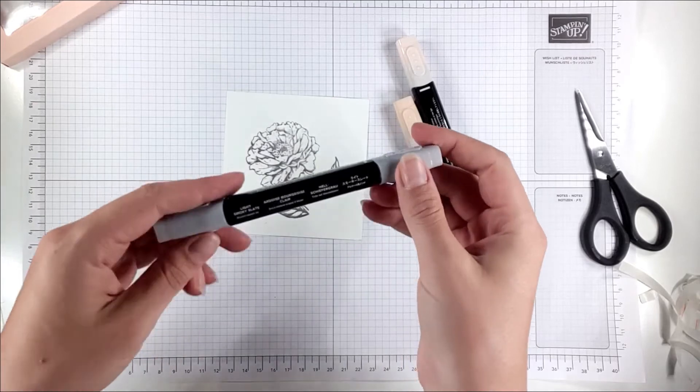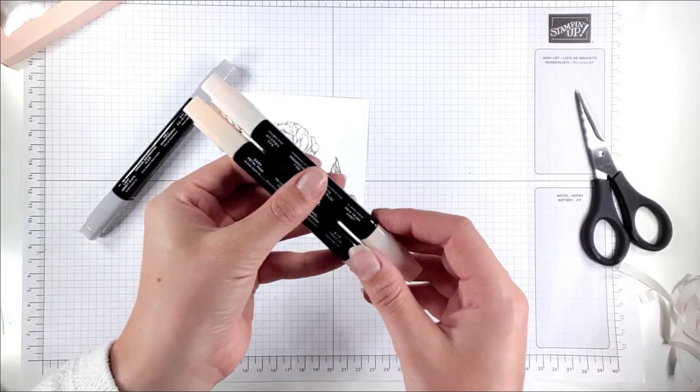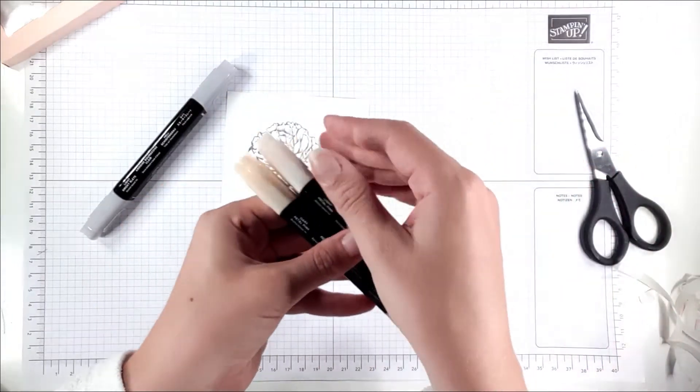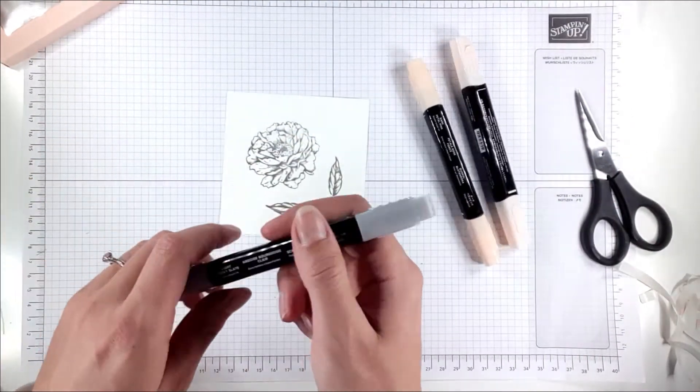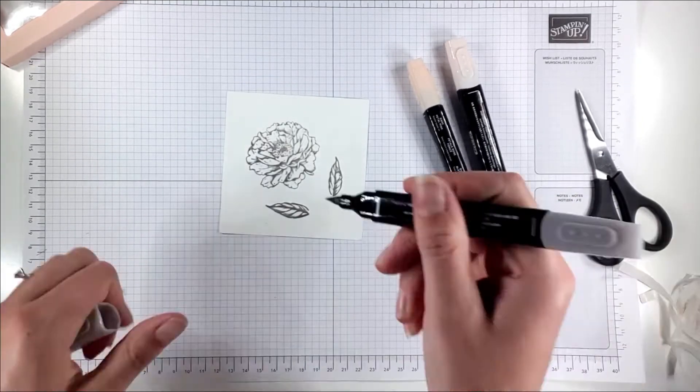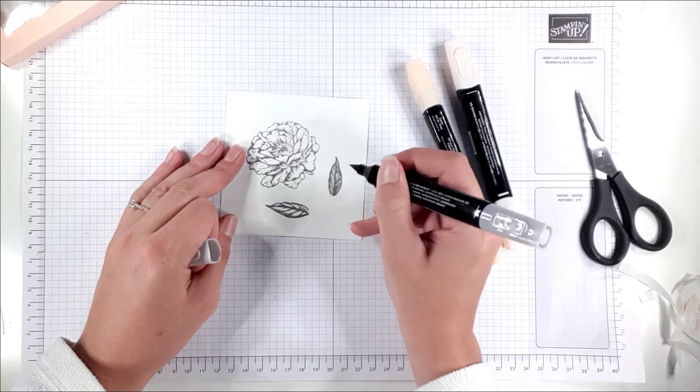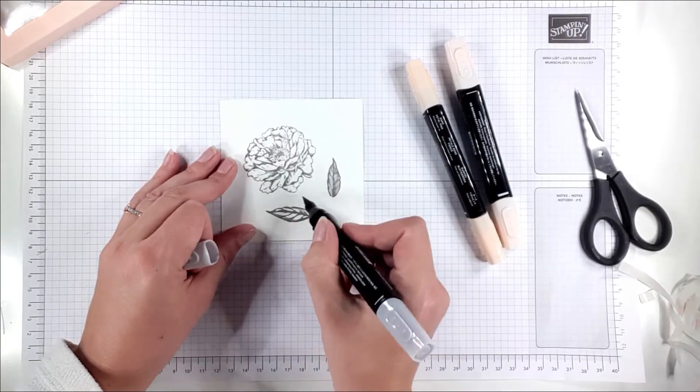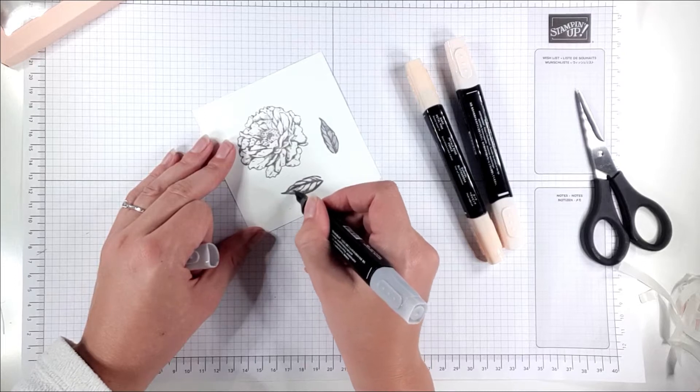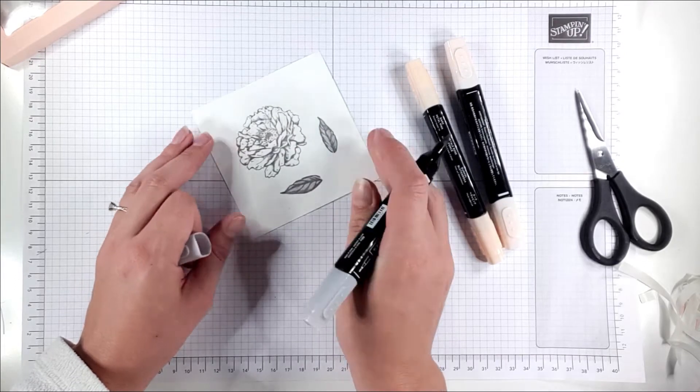I'm just going to use the light smokey slate and the petal pink blend for this. I'm just going to colour the leaves in the smokey slate and I'm not even going to do any shading or anything. I'm just going to colour them flat because actually the stamp set does a lot of the shading for you. It's got darker lines in there and because I'm just doing a grey on top of a grey, that adds a lot of the shading for me.